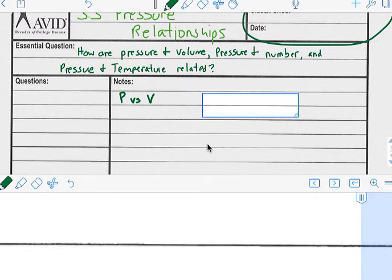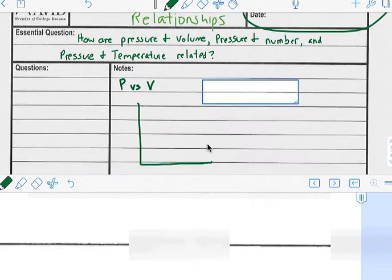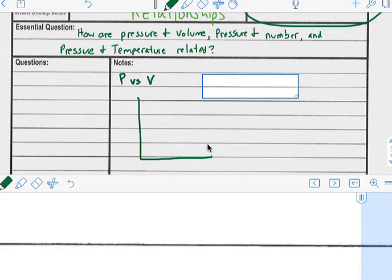So we did a lab where we changed the volume and we figured out what happened to the pressure. So you had the little syringe attached to the gas sensor and you didn't add any new gas.